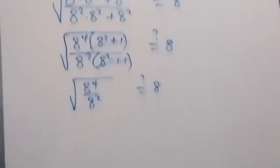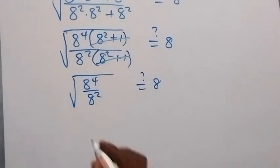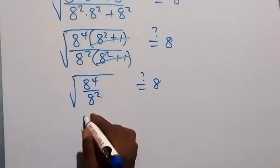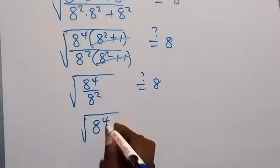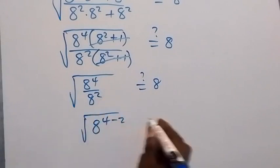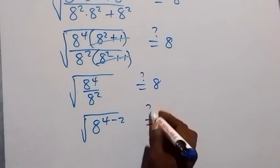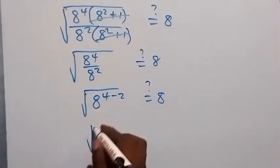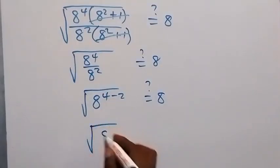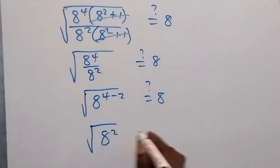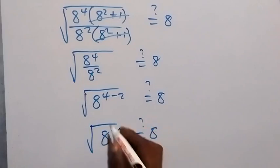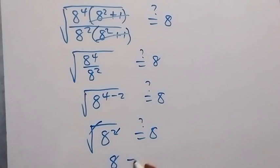When we apply the law of indices here, we subtract the powers. We have square root of 8 raised to the power 4 minus 2. Is this equals to 8? Then, 4 minus 2 is 2, so we have square root of 8 squared. Is this equals to 8? The square cancels the square root, and 8 is therefore equals to 8.